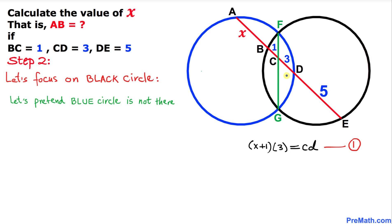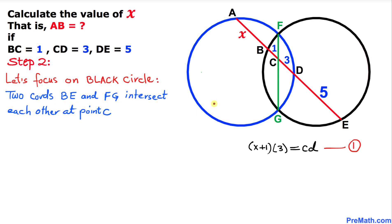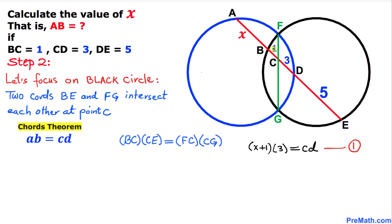Now for the next step, we focus on the black circle and pretend the blue circle is not there. Inside the black circle, chords BE and FG are intersecting each other at point C. Applying the intersecting chords theorem again: I'll call BC lowercase a, CE lowercase b, FC lowercase c, and CG lowercase d.